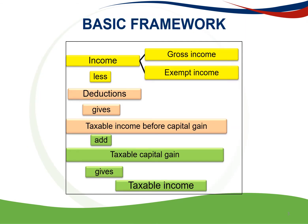If you look at the basic framework for determining your taxable income, you always start with your income, which consists of gross income and exempt income. Then less all of your possible deductions. This gives you your taxable income before any capital gains. Then you add any taxable capital gain made during your year of assessment, which ultimately gives you your taxable income.